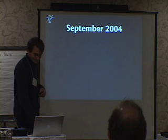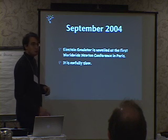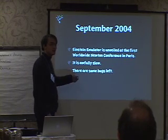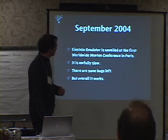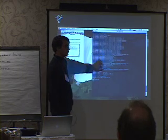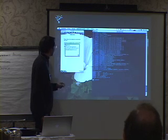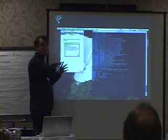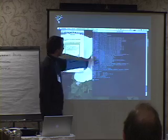In September 2004, the Einstein Emulator was unveiled at the first World War Newton conference in Paris. It was awfully slow — it took a long time to boot, and I didn't even get past the boot phase because there were some bugs left. But overall it worked. This is a screenshot displayed during the conference: a monitor system showing what's happening in the Newton, and here we have a Newton screen. It said, 'This unit requires immediate repair. Factory calibration has been lost. It will not recharge batteries until this problem is corrected.' So I considered sending my PowerBook to Apple to get it repaired.